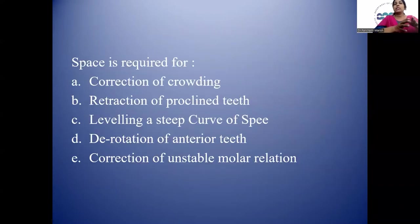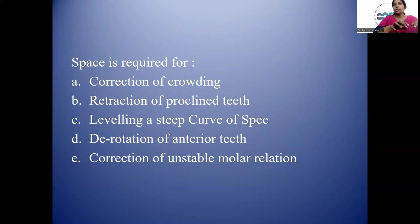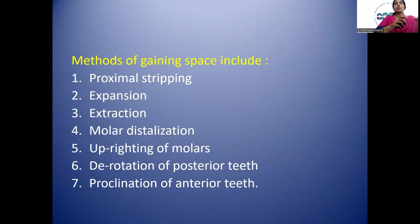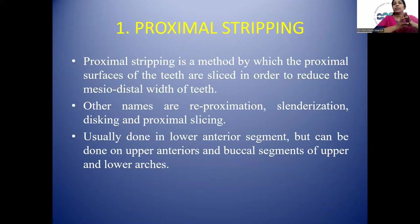Space is required for various corrections: correction of crowding, retraction of proclined teeth, leveling of a steep curve of Spee, derotation of anterior teeth, and correction of unstable molar relation. Methods of gaining space include proximal stripping, expansion, extraction, molar distalization, uprighting of molars, derotation of posterior teeth, and proclination of anterior teeth.